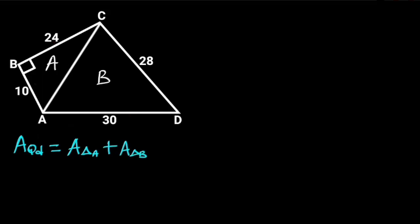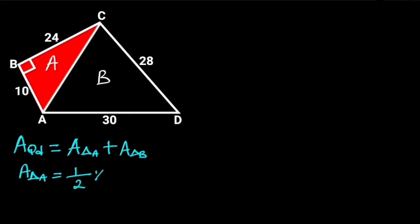Next, let's find the area of triangle A. Since AB is perpendicular to BC, this shows that triangle A is a right triangle. And the area will be 1 over 2, times AB, times BC, where AB is the base of the triangle and BC the height. AB is equal to 10 and BC is equal to 24.